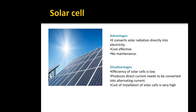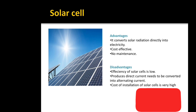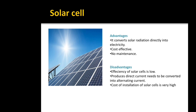The disadvantages of solar cells are that their efficiency is low, they produce direct current which needs to be converted into alternating current, and the cost of installation of solar cells is very high. These are the advantages and disadvantages of the solar cell.